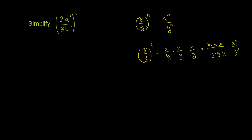That example shows why this property works. So let's use it in our actual problem. We have 2a squared over 3b to the fifth, all of that to the fourth power. This is going to be the same thing as 2a squared to the fourth power, all over 3b to the fifth to the fourth power.